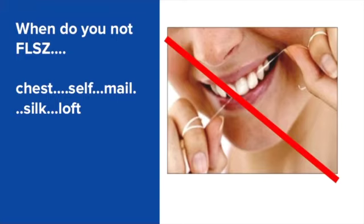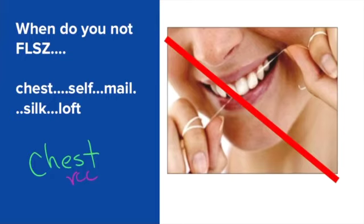You don't floss for words like 'chest.' Even though it is a one syllable word and a closed syllable, it is not a floss word because it doesn't end in F, L, S, or Z. Even though it has an S, the T comes after it — that T is there, so it's not a floss word.